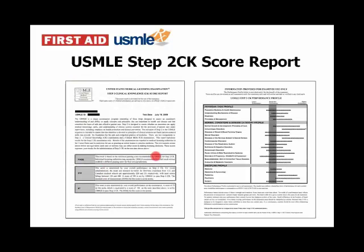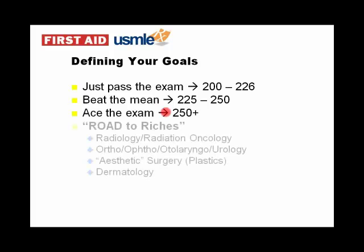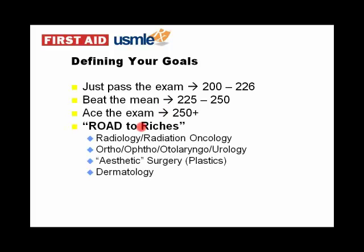In terms of the score report, it looks just like your Step 1 report — you've got your pass-fail indicator, your three-digit score, your two-digit score, and a histogram showing your relative strengths and weaknesses in terms of performance by task, disease and conditions categories, and discipline profiles. You do need to think about what type of goals you have: passing the exam comfortably, beating the mean, or acing the exam. There is a relationship to where you want to end up, and we'll talk about this a little bit later.